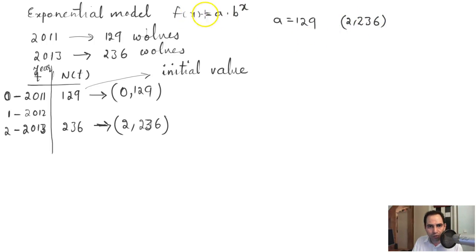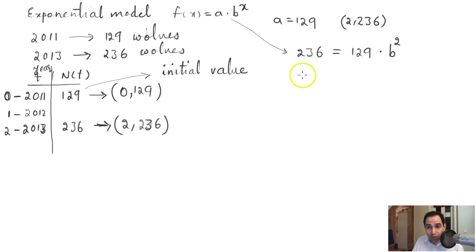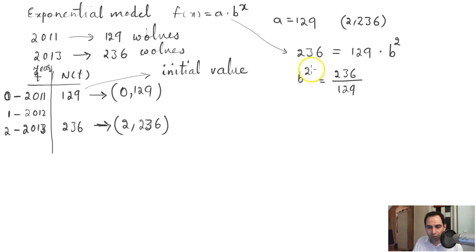Writing the equation in the form f(x) = a × b^t, we substitute: 236 = 129 × b^2. That means b² = 236 / 129.